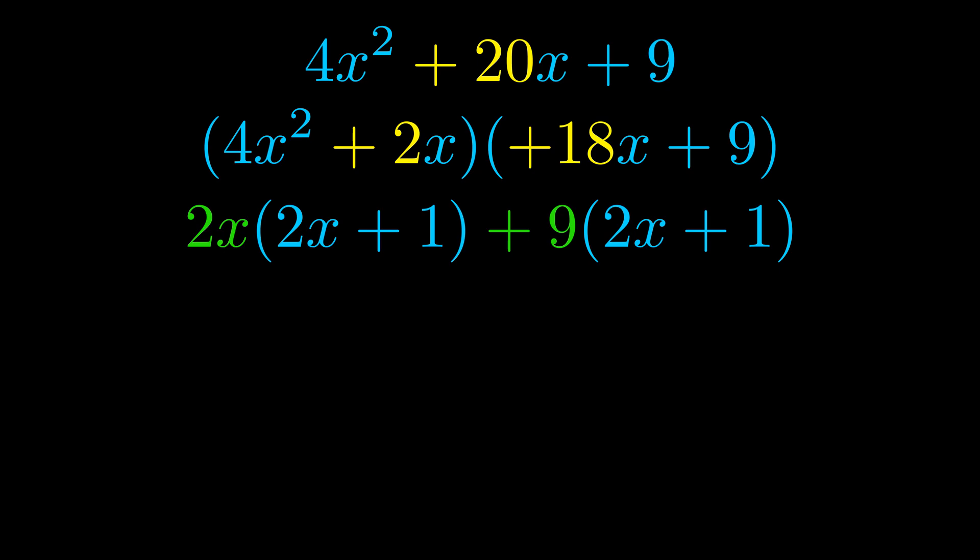Notice also how what remains inside of the parentheses is the same in both cases. The blue values are the same. Those blue values will become one of our factors and we will combine the two green values, the GCFs that we pulled out, to get the other one. And that is our fully factored equation.